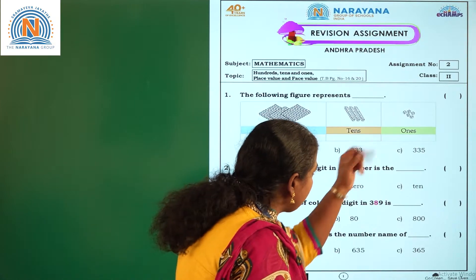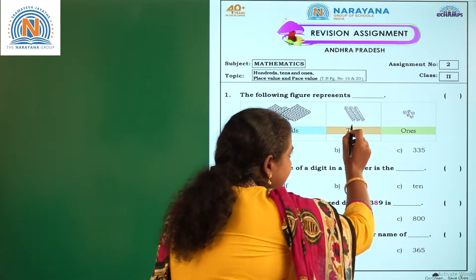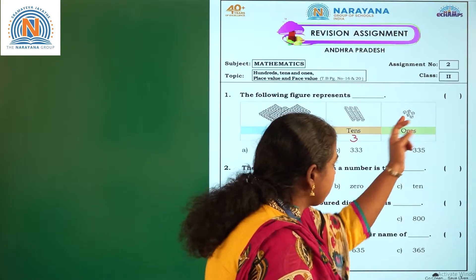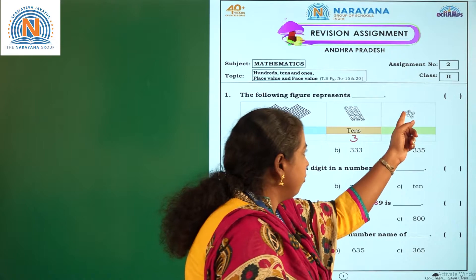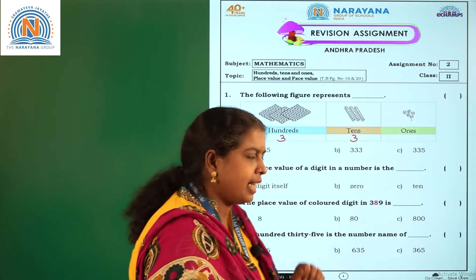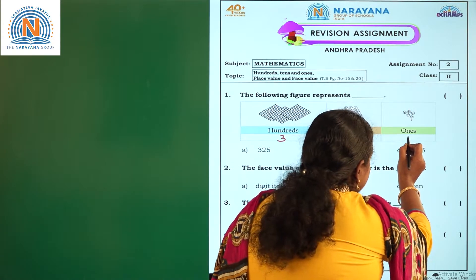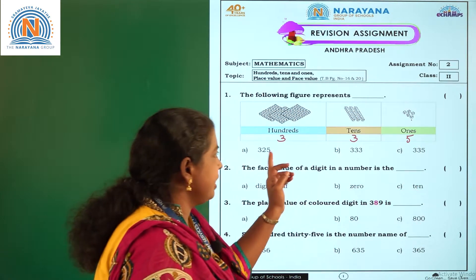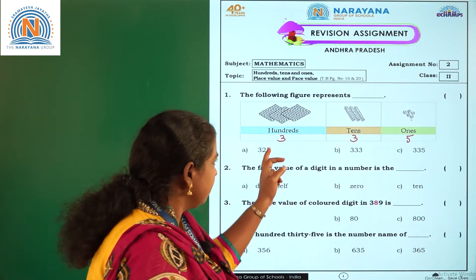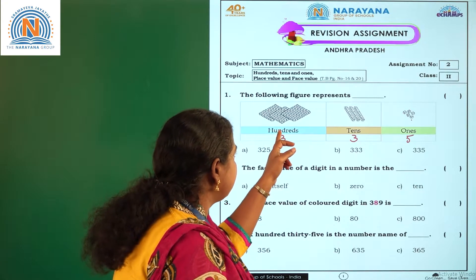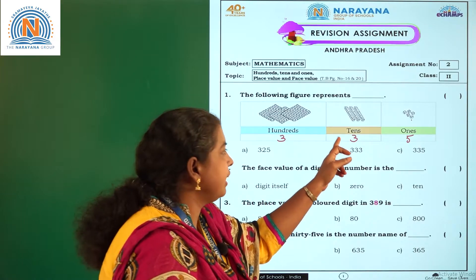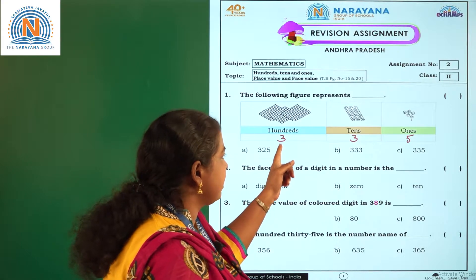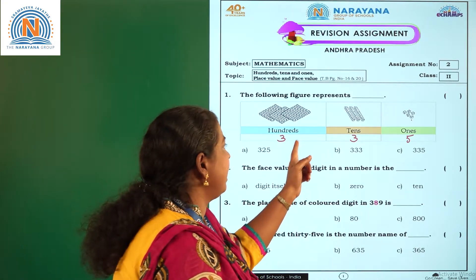How many tens blocks are there? 3 tens blocks are there. How many ones blocks are there? 5 — 1, 2, 3, 4, 5. So you have to write the number 5 here. So what is the number formed with these blocks? There are 3 hundreds blocks, 3 tens blocks, 5 ones blocks. So you have to write this number as 335.